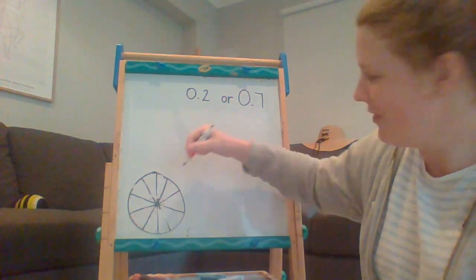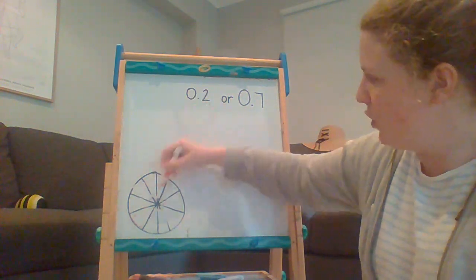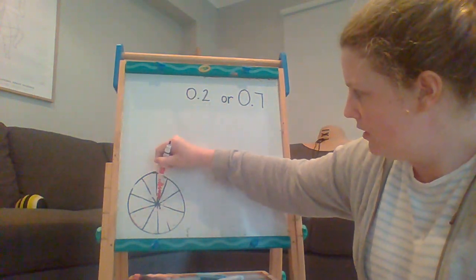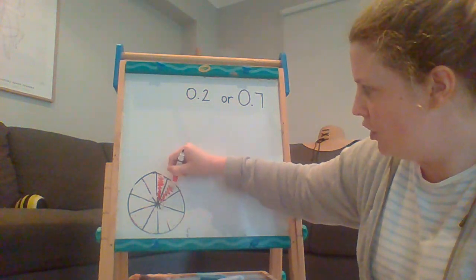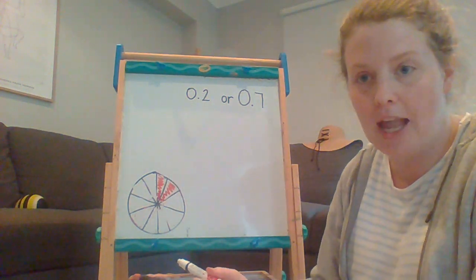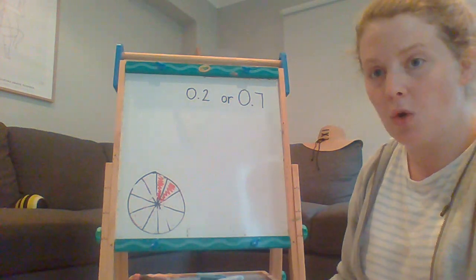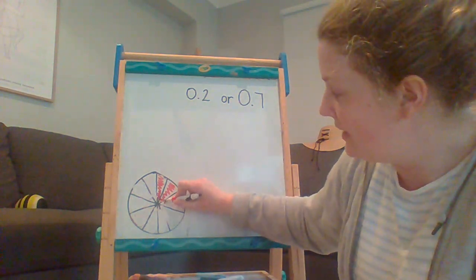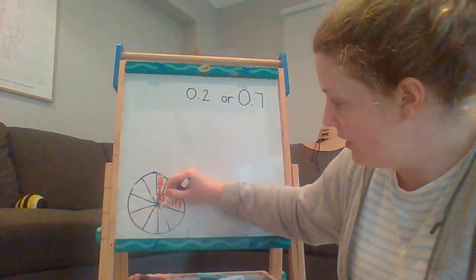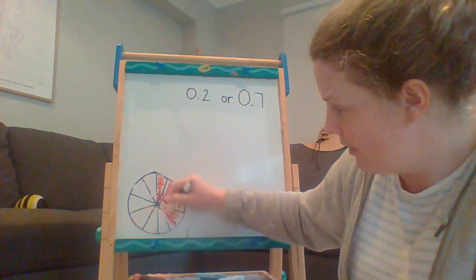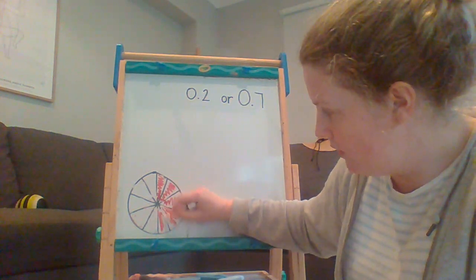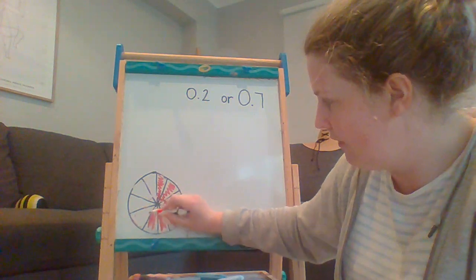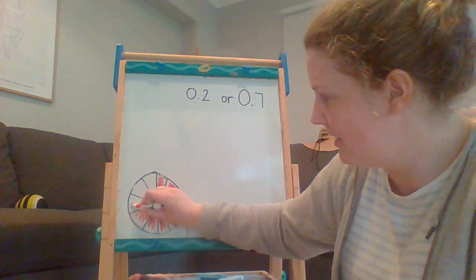Well, not grid, sorry, pie. If I had 2 and I've only eaten 2 pieces of my pie or 2 tenths of my pie, that's how much I would have eaten. Or if I had 7 tenths, 1, 2, 3, 4, 5, 6, 7.